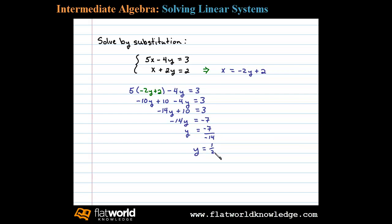Now once we have y, we then back substitute to find the corresponding x value. In this case we'll use x equals negative 2y plus 2, and we'll substitute one half in for y.